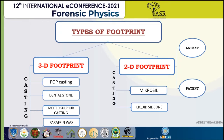For casting in snow, there are mainly two methods: melted sulfur casting and paraffin casting. When it comes to 2D footprints, they are mainly divided into latent and patterned. Patterned footprints are visible and can be preserved using photographic methods, while latent footprints are not visible and are developed using fluorescent powders and examined under alternative light sources. 2D footprint casting can be done using micro seal and liquid silicone.